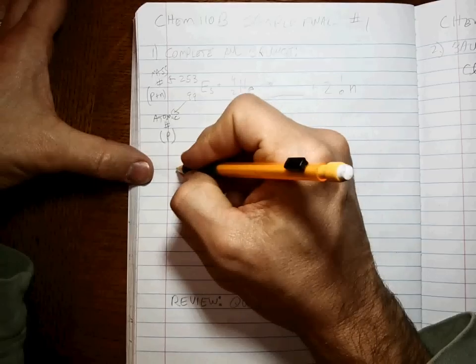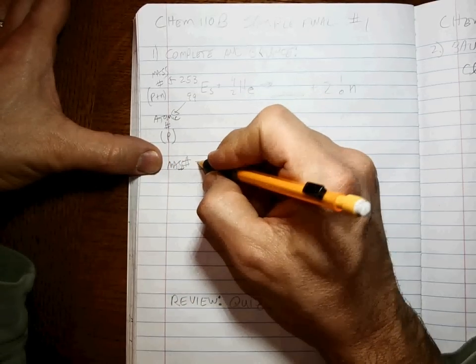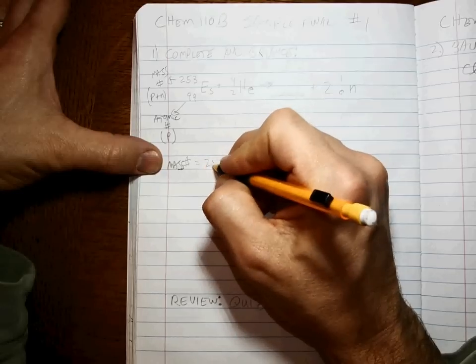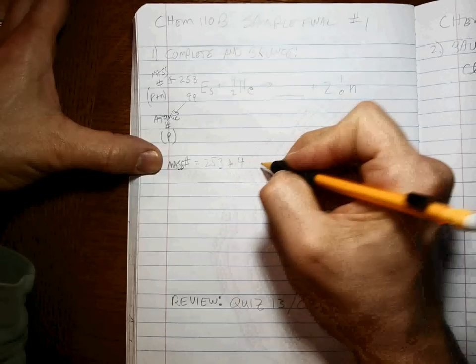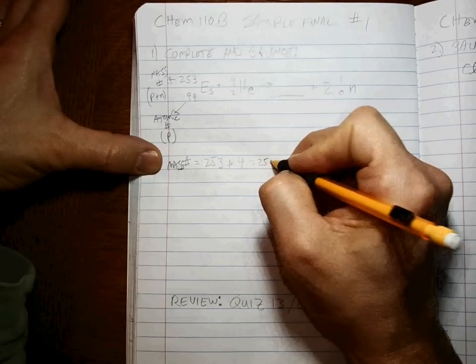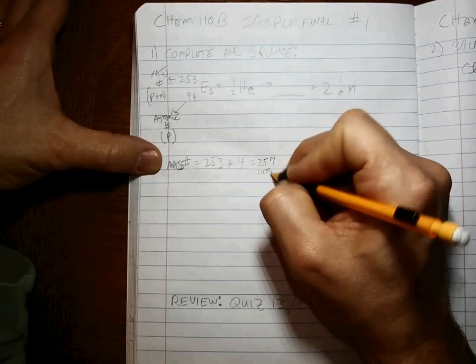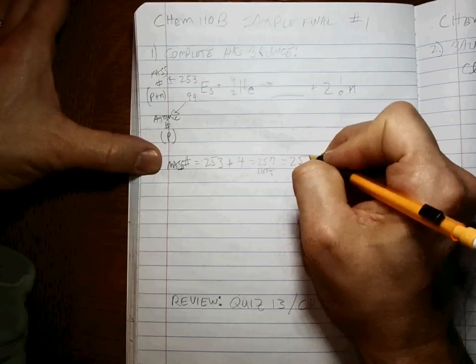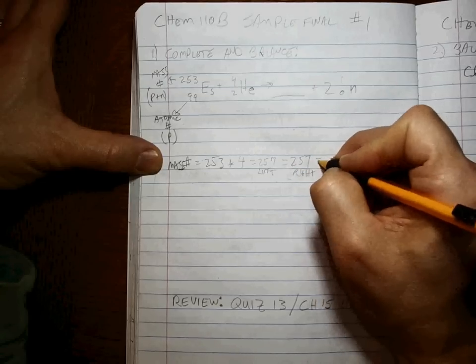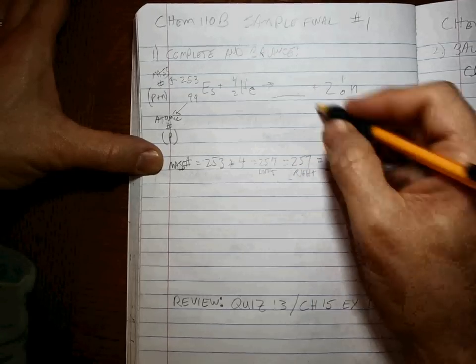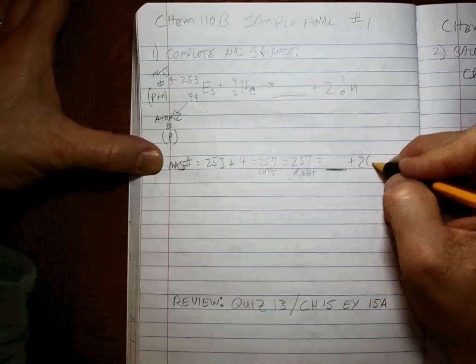Okay, so let's just do it quick. The atomic mass number is 253 plus 4, or 257 on the left. So it has to equal 257 on the right, which means it's whatever's there plus 2 times 1.